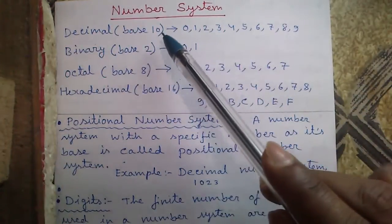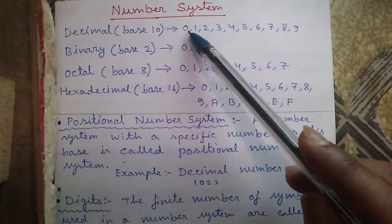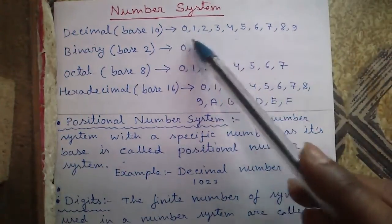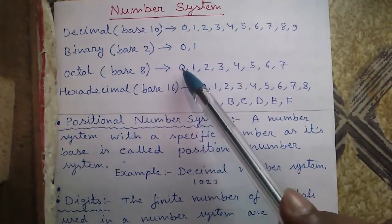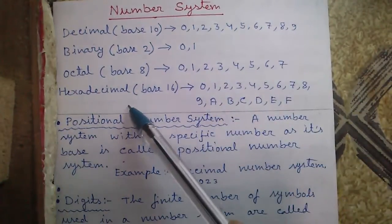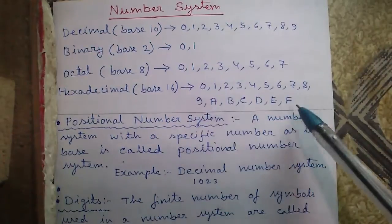The base of decimal is base 10, that is there are 10 number of digits from 0 to 9, binary base 2, 2 digits 0 and 1, octal base 8 from 0 to 7 and hexadecimal base 16 from 0 to F.